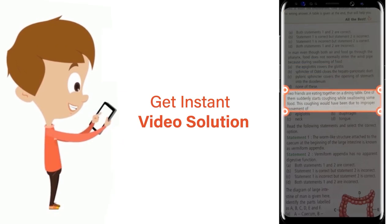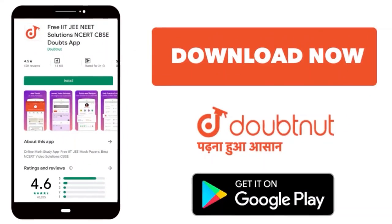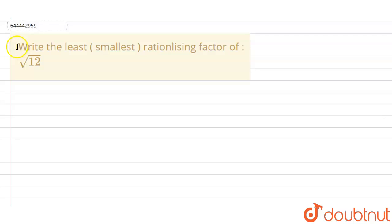Crop the question and get instant video solution. Download Doubtnet app today. Our question is: write the least smallest rationalizing factor of root 12. Here we have to find the smallest rationalizing factor of root 12.